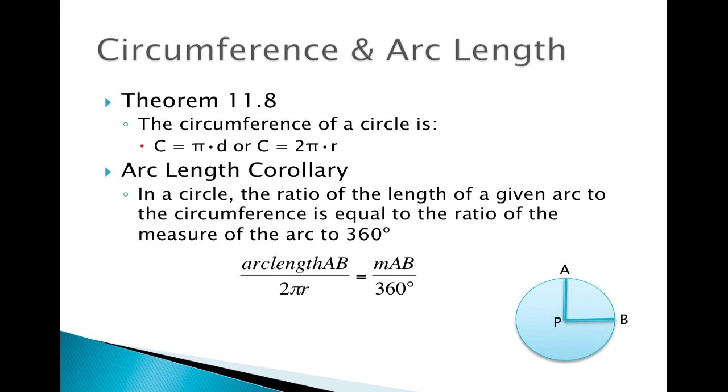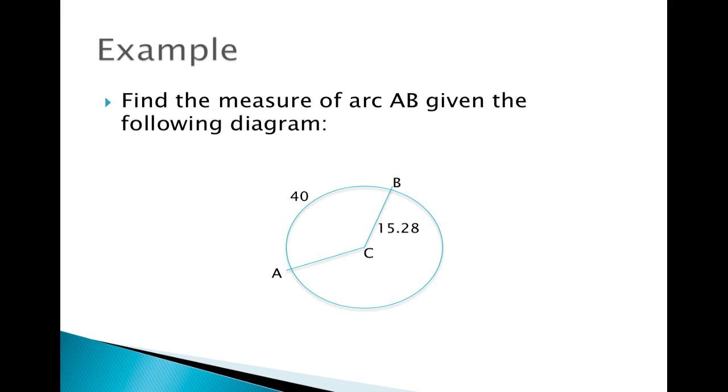So let's go to an example of this. For example, we need to find the measure of arc AB, and we're given the following information. So we have an arc length of 40 units, and we know the radius, which is 15.28. So let's go ahead and set up our ratio.